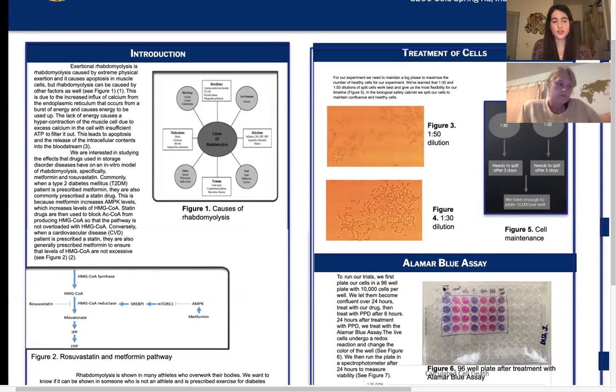So this occurs because of an increased flux of calcium from the endoplasmic reticulum. And that's caused by a burst of energy, which causes all of the energy to be used up. So this lack of energy causes hypercontraction of the muscle. And due to the excess calcium in the cell with insufficient ATP to filter it out, the cell begins to lyse, and all of the intracellular contents spill into the bloodstream.